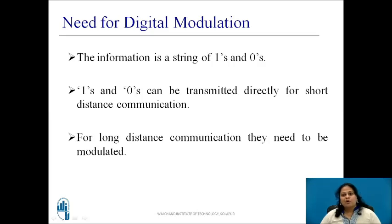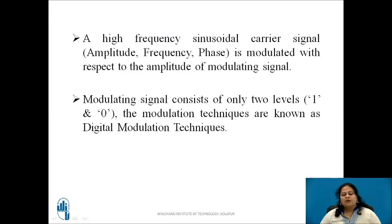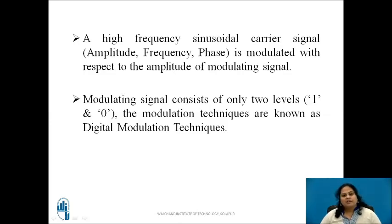That is, they are modulated using a high frequency carrier signal and then transmitted. During modulation, the amplitude, frequency, or phase of the carrier is changed with respect to the instantaneous value of the data stream — that is, 1s or 0s in that bit duration. These modulation techniques are known as amplitude shifting, frequency shifting, and phase shifting respectively. As the modulating signal consists of only 2 levels, that is 1s and 0s, these are known as digital modulation techniques.